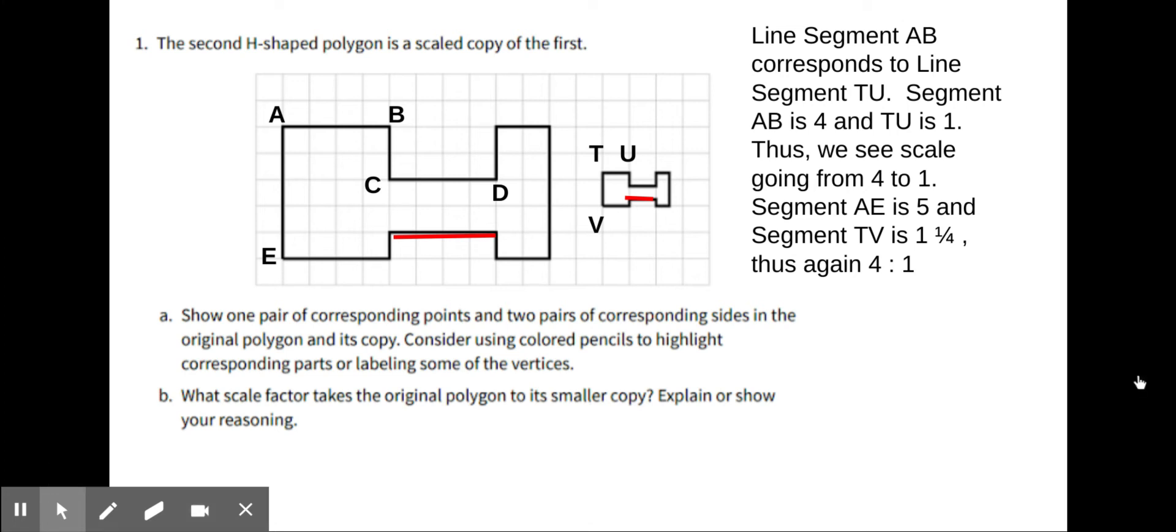Okay, let's talk about yesterday's problem. The second H-shaped polygon is a scaled copy of the first. Show one pair of corresponding points and two pairs of corresponding sides in the original polygon and its copy. Consider using colored pencils to highlight corresponding plots or labeling some of the vertices.